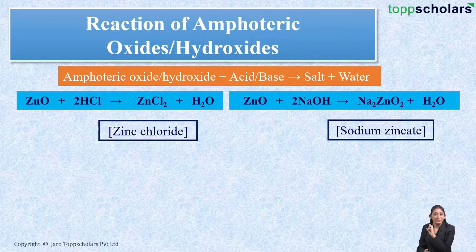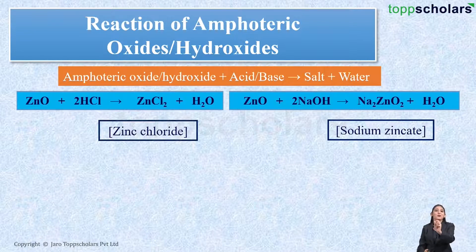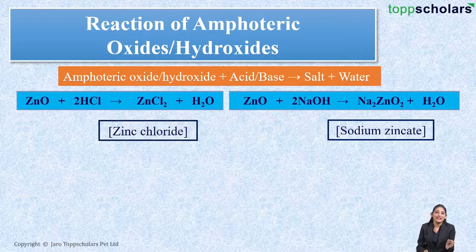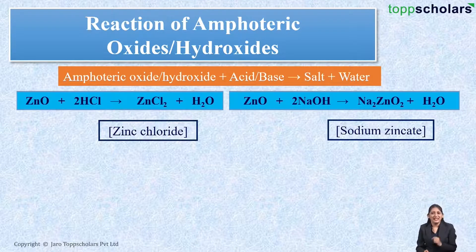Since zinc oxide behaves as both an acid as well as a base, it is said to be an amphoteric oxide. Amphoteric oxides are the ones which have both acidic character as well as basic character.